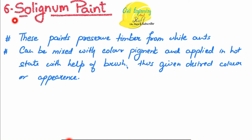We also have soluminum paints, which protect the timber from white ant attack — as discussed in the previous video. One major advantage of using soluminum paint is that color pigments can be added to it, which allows it to be used for decorative purposes. Mixing soluminum paint with color pigment enables the use of the timber for decorative work.